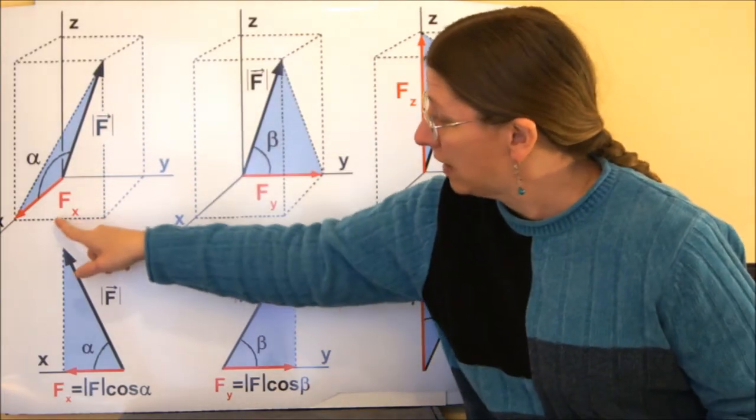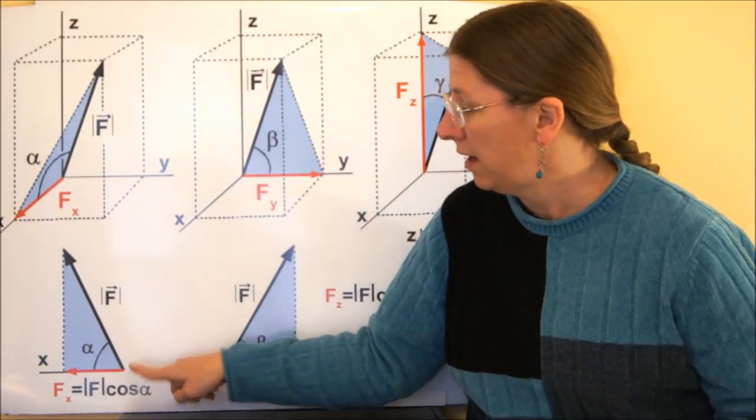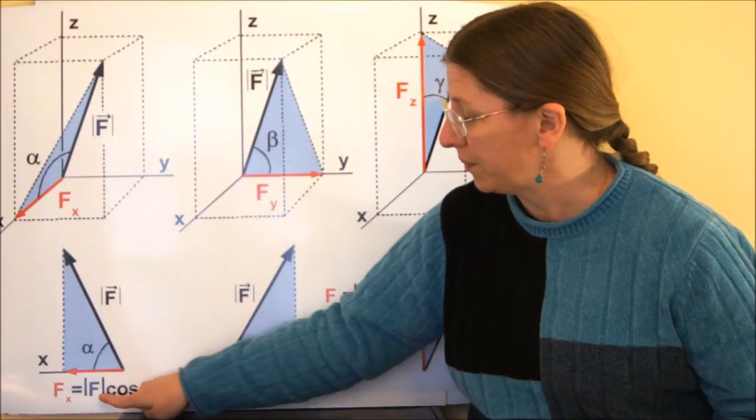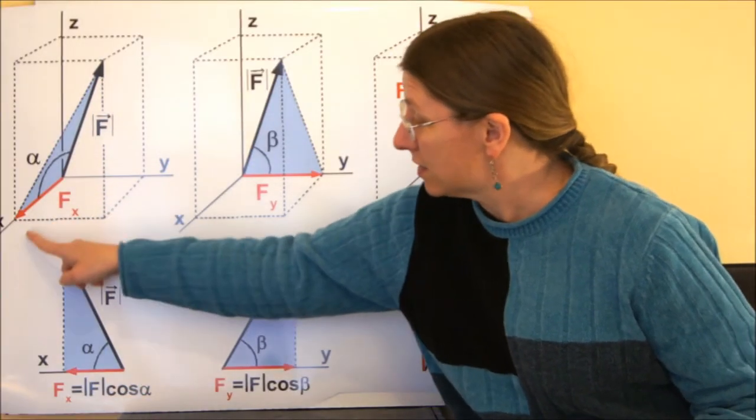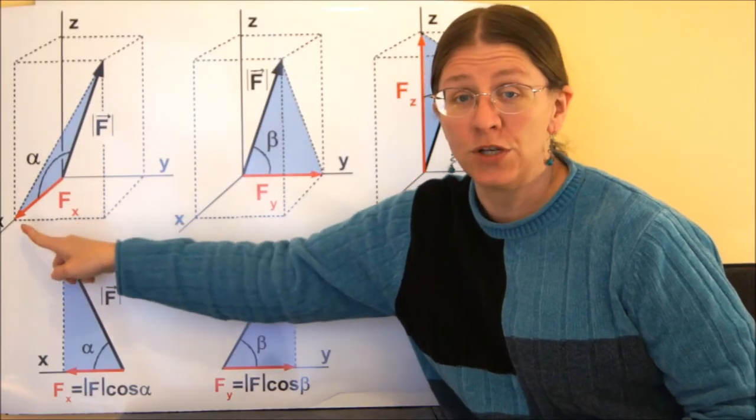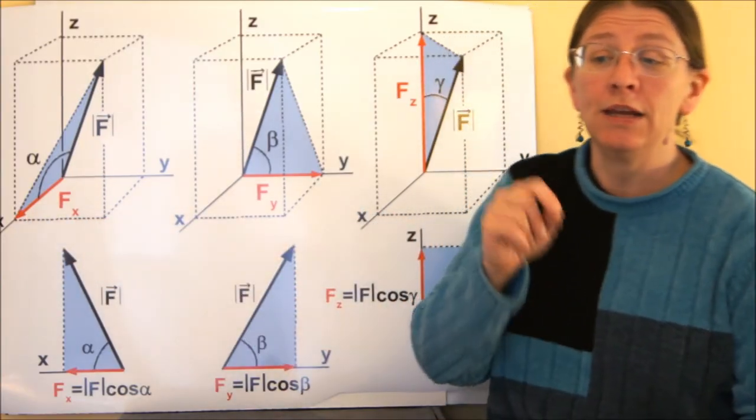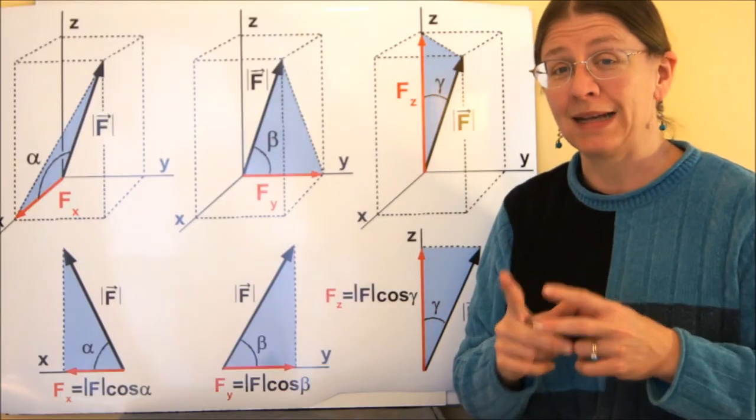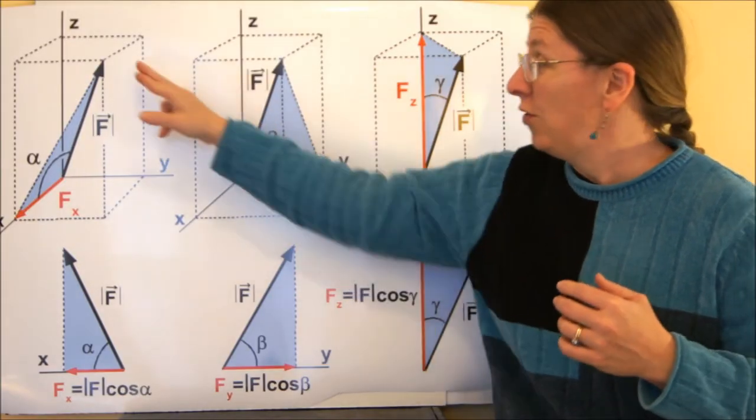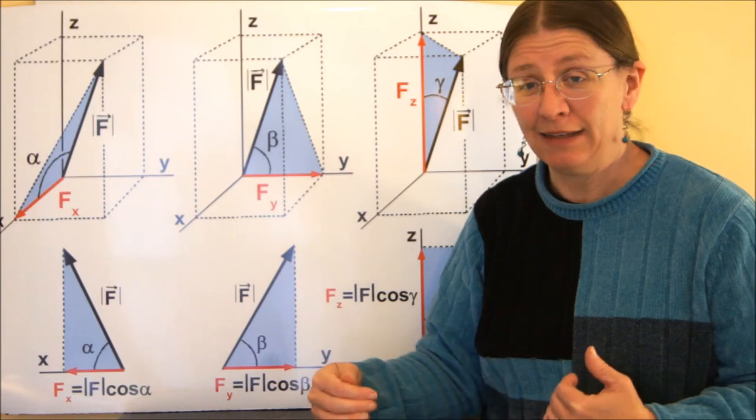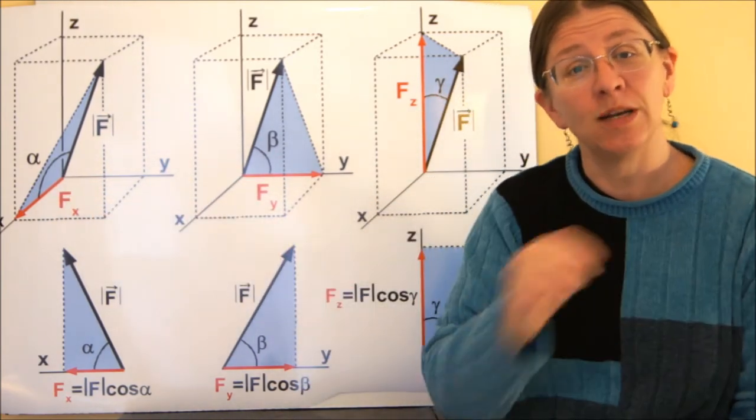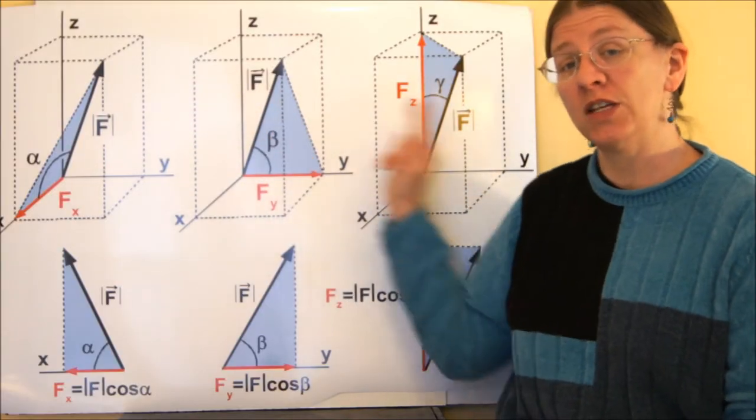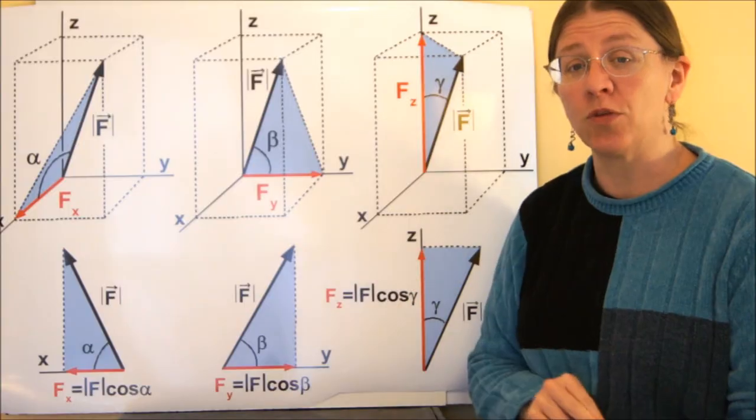So this triangle, this component right here, Fx, gives you the magnitude of F times cosine of alpha. That's this coordinate projection. Remember that if you have orthogonal axis systems, you can project onto a line, any line. The projection of the force onto the line, that's what this is. So it's not a projection on the plane, it's a projection of this force onto each of the three axes.